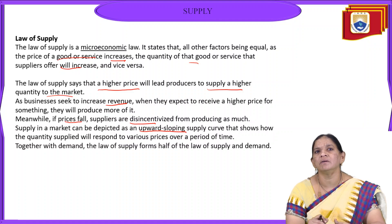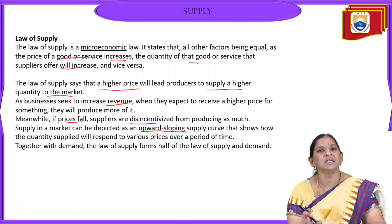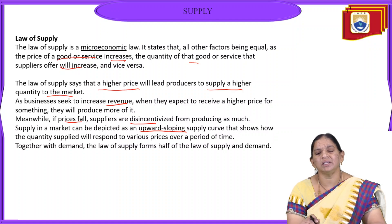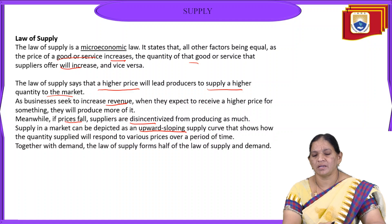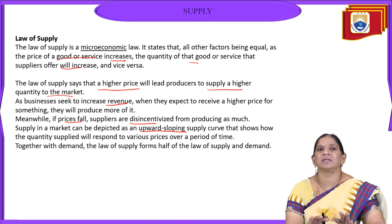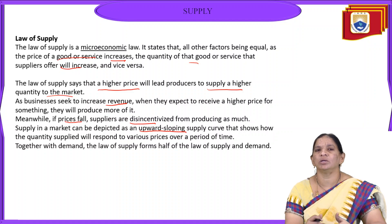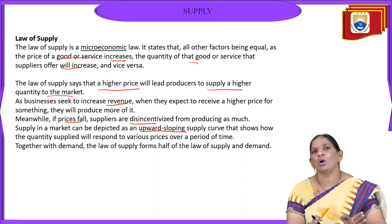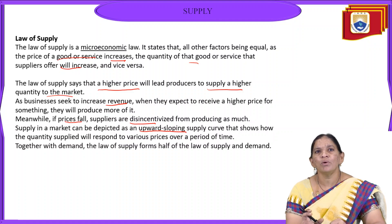In the supply curve, we can see at what prices and what quantity the producer wants to send to the market. Together with demand, the law of supply covers the other half of the law of supply and demand. Demand and supply both determine the market equilibrium. Now we will complete the second half — the law of supply — which gives us the equilibrium condition in the market.